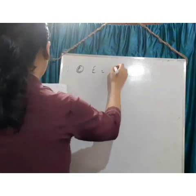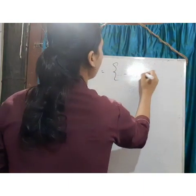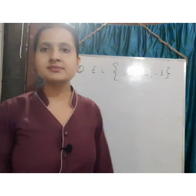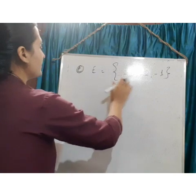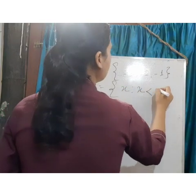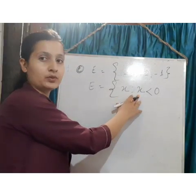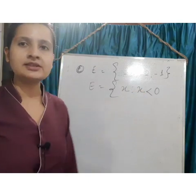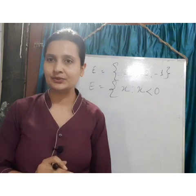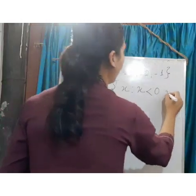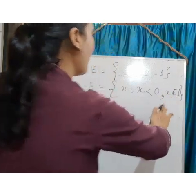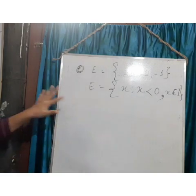So E = {..., -4, -3, -2, -1} — you can start from anywhere, like -7, -6, -5. This is your roster method. For the set builder form: E = { x | x < 0, x ∈ ℤ }. Since x is an integer, it should be less than zero — even zero is not a negative integer. So x is an element of integers and x < 0. I hope question 1 is clear.